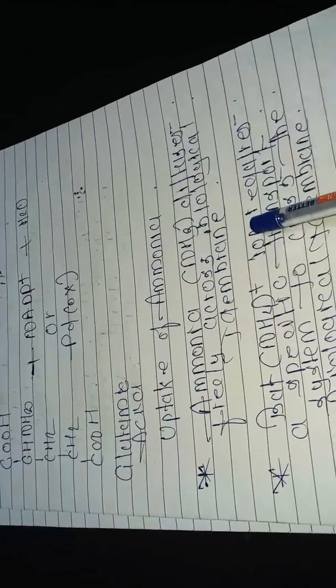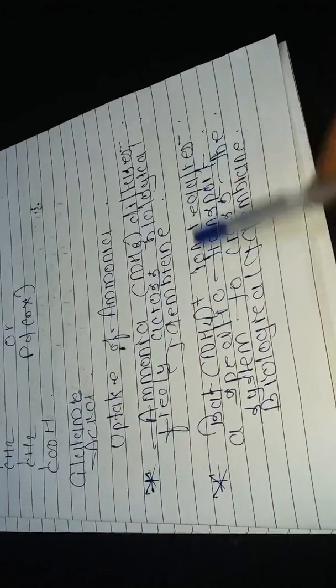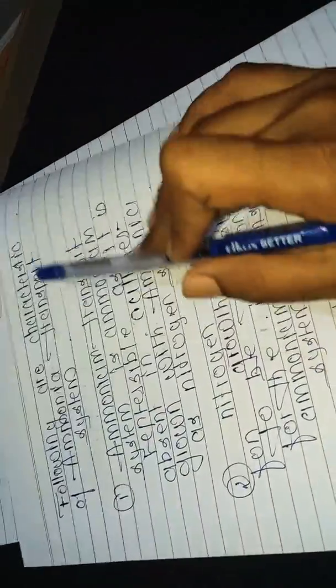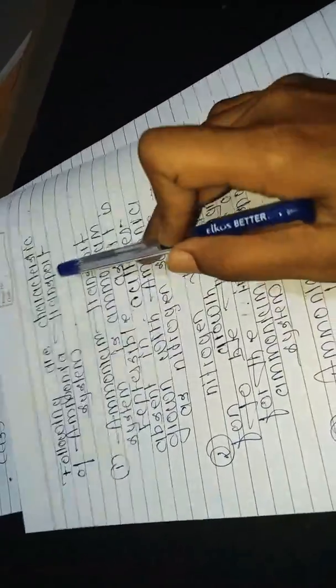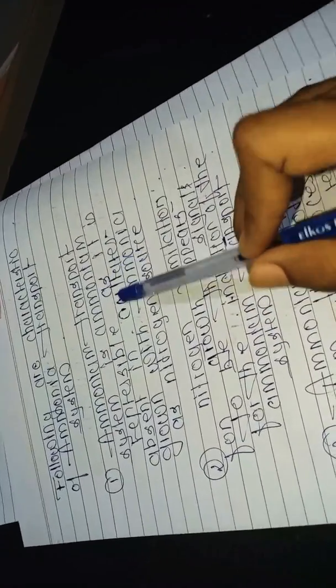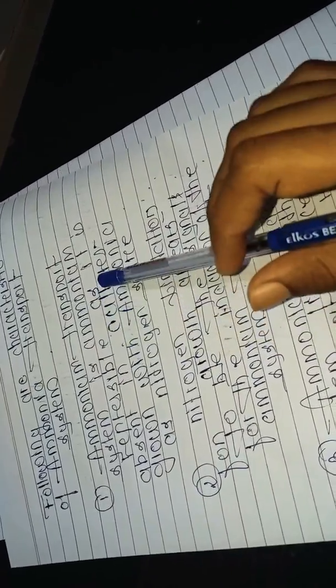Ammonia diffuses freely across the biological membrane, but the ammonium ion requires a specific transport system to cross the biological membrane. The following are characteristics of the ammonium transport system: The system is repressible in cultures grown with ammonium as the nitrogen source.